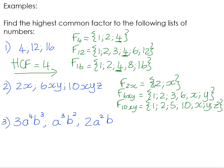To find the highest common factor of 2x, 6xy, and 10xyz, we consider numbers and variables separately. The highest numeric factor common to 2, 6, and 10 is 2. For the variables, 2x doesn't contain y, so y is not a common factor. But all three contain x. So the highest common factor is 2x.